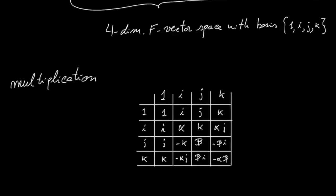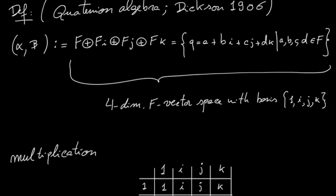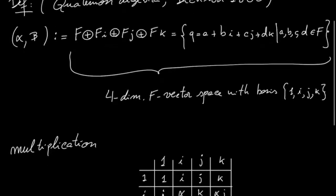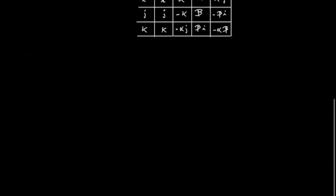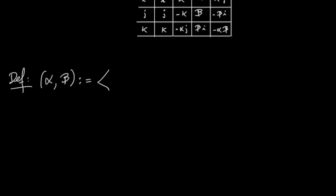Using this multiplication table and distributivity one can define the multiplication of any two quaternions. Another more compact way to define this quaternion algebra is as follows: one can consider the F-algebra generated by i and j, two generators subject to the following relations: i squared is equal to alpha, j squared is equal to beta, and they anti-commute, so ij is equal to minus ji.